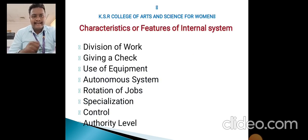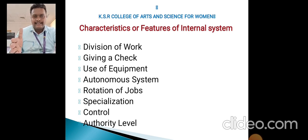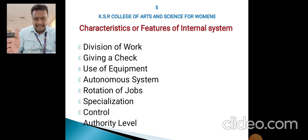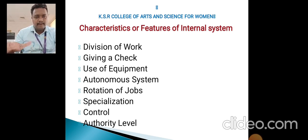The characteristics of the internal system are: first, division of work — work must be divided among all employees; second, giving a check — monthly, or every two or three months, documents must be properly checked, which helps for year-end filing; third, use of equipment; fourth, rotation of jobs — any employee in the same position should be given the chance to rotate to another department; fifth, specialization; and sixth, control of authority level.